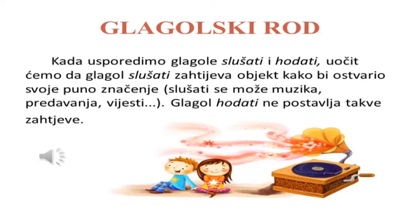Glagoli su nesamostalne riječi, što znači da je za realiziranje glagolske radnje često potreban objekt na koji ta radnja prelazi. Ovo je jako bitno da znate kako biste shvatili sljedeću gramatičku kategoriju glagola, a to je glagolski rod. Kada usporedimo glagole slušati i hodati, uočit ćemo da glagol slušati zahtijeva objekt kako bi ostvario svoje puno značenje – na primjer: slušati se može muzika, predavanja, vijesti.